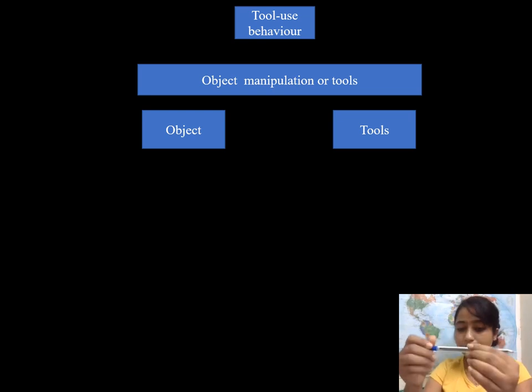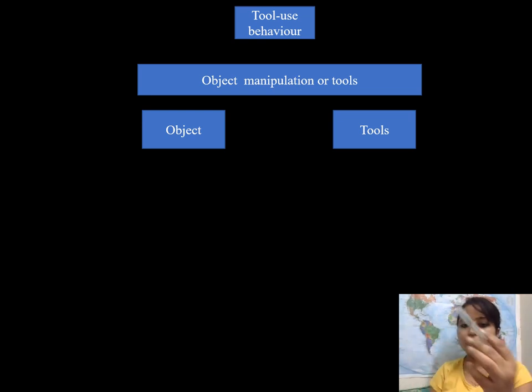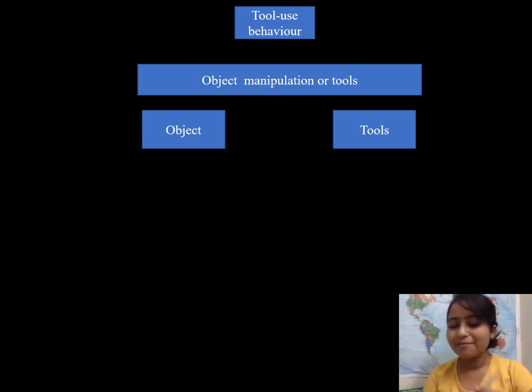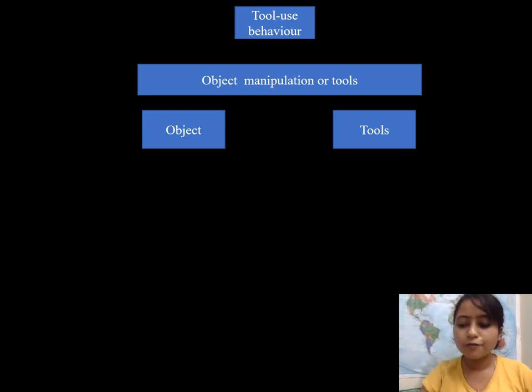When I dismantle the same pen and use the hollow part to drink water from a glass, it becomes a tool again. Why? Because the function as well as the morphology has changed.